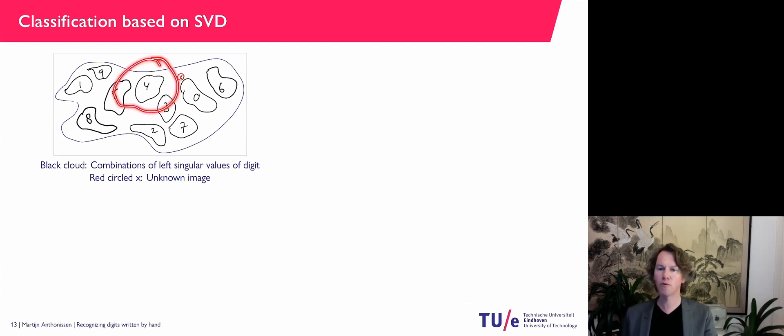What I mean by this 4 is that I take the left singular value, so the columns of the U matrix, corresponding to all the images that represent the 4. And then you have a subspace. And that subspace, I try to indicate here, this little black cloud here.